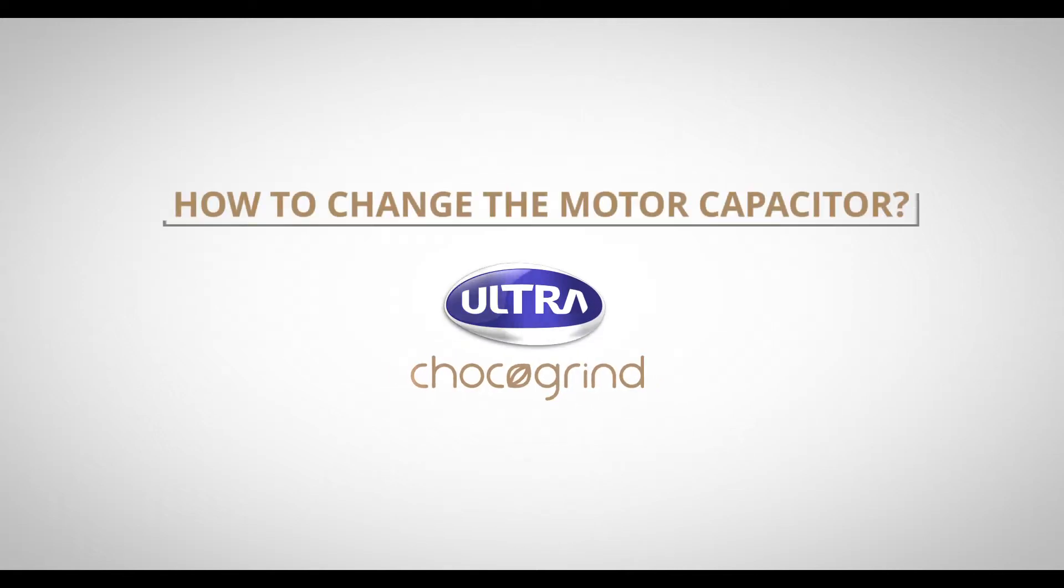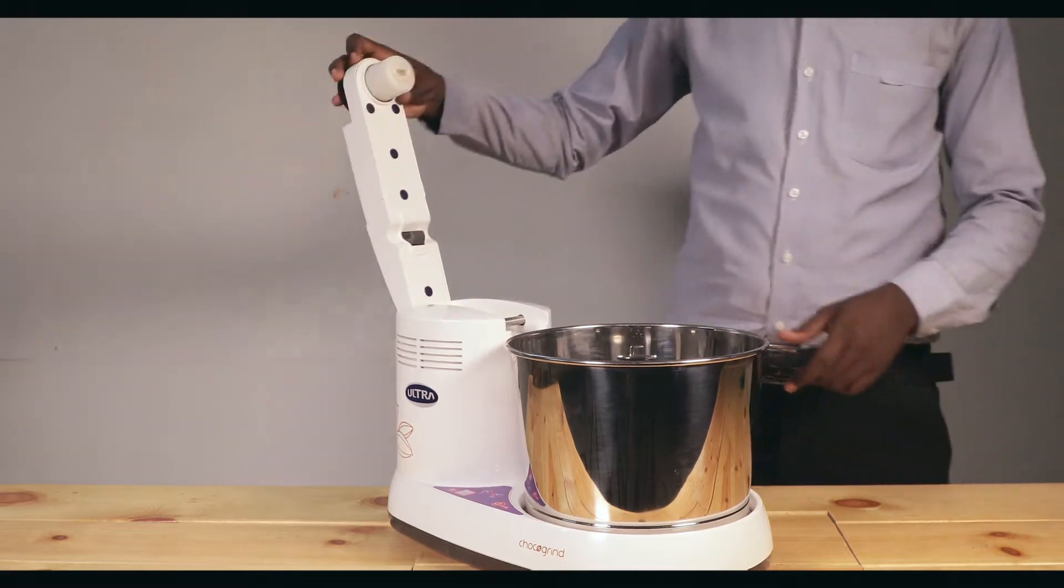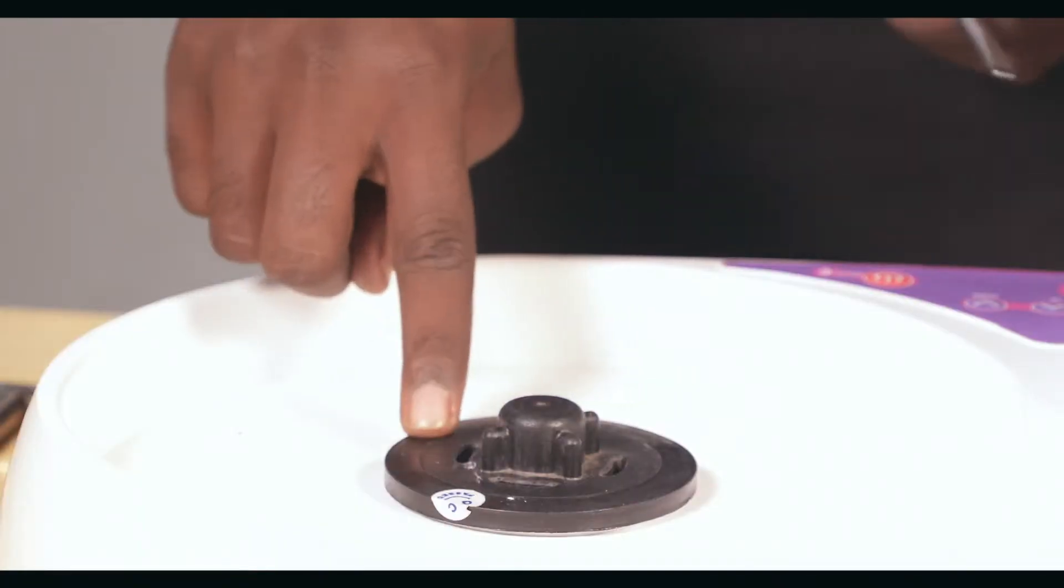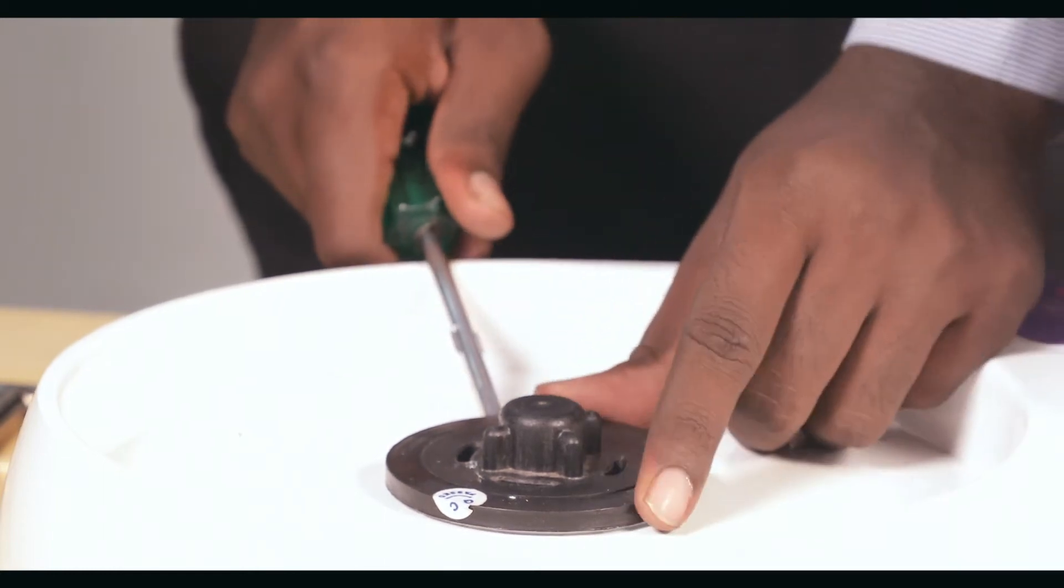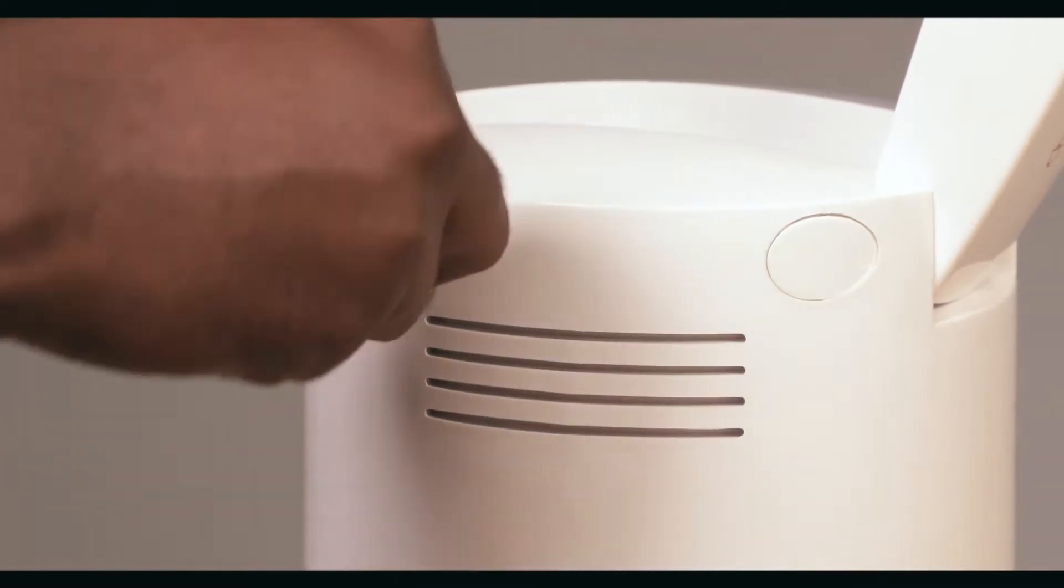How to change the motor capacitor. First, take out the drum from the grinder. Remove the collar pad. Then, pull out the caps.